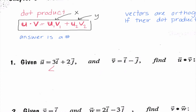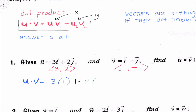Number one tells us that vector u is 3i + 2j, so we know that's like (3, 2), and vector v is i − j, which is like (1, −1), and we need to find the dot product between those two. So if I'm doing u dot v, I'm going to multiply their x values together — 3 times 1 — and then add it to the product of the y values, plus 2 times −1. So I get 3 + (−2), which is 1. So 1 would be our answer.